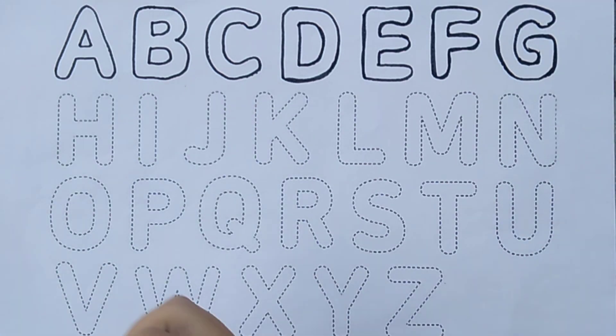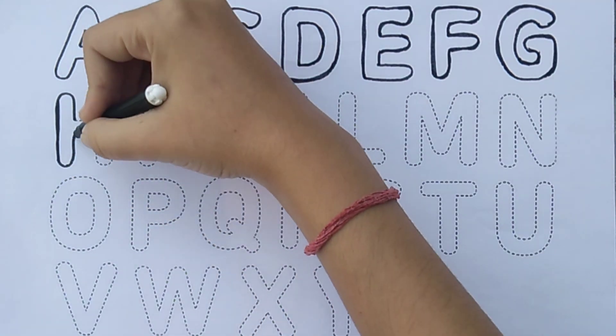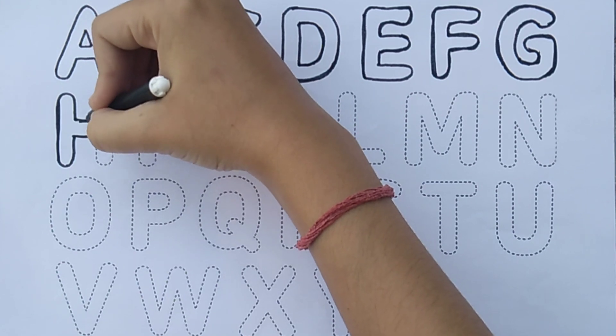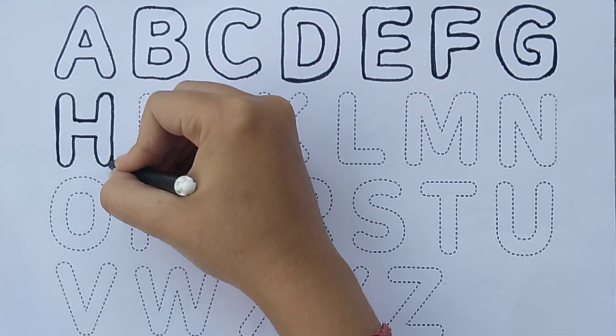Letter G. I wrote a letter to my love and on the way I dropped it. Dropped it, I dropped it. And on the way I dropped it. A little boy he picked it up and put it in his pocket. Letter H.